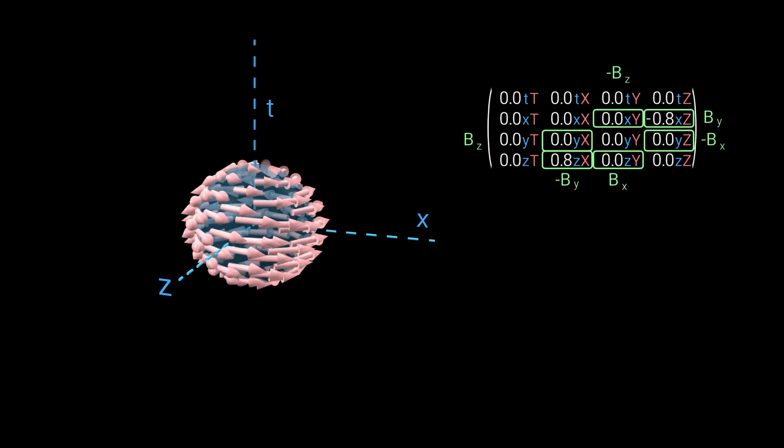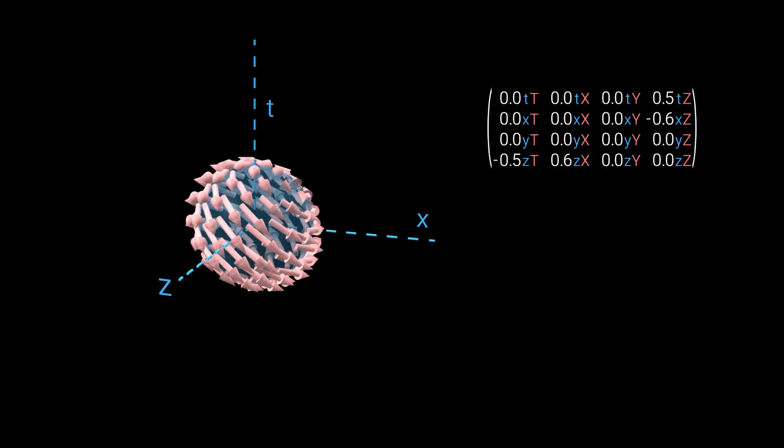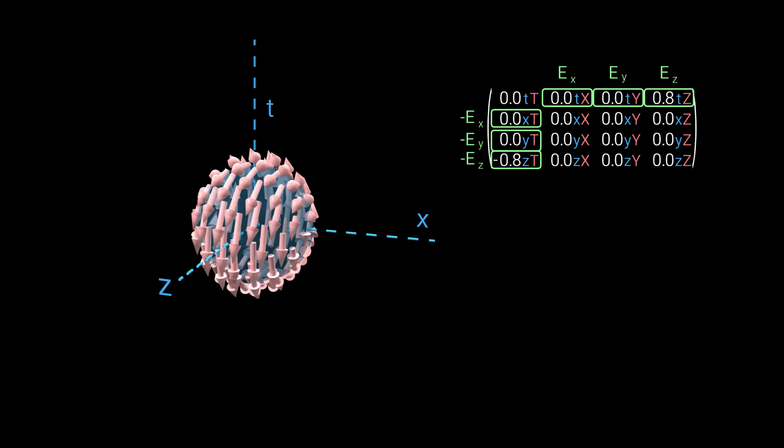A magnetic field still looks basically the same, a vortex. Now let's show an electric field. It's exactly the same map except rotated in spacetime. Without a coordinate system, we won't be able to tell them apart.